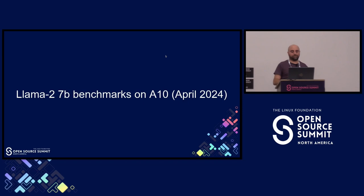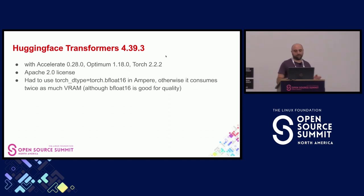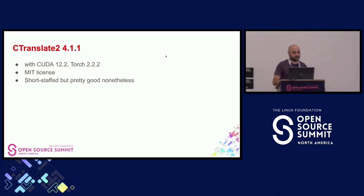We updated the benchmarks in April, so we have fresh data. Here are the versions and different executors we tested. An important note when using the HuggingFace Transformers API on Ampere: if you don't specify the dtype, it consumes roughly twice the GPU VRAM. We want to use BFloat16 for all computations because it has better quality — so be sure to pass the correct parameter when using the `from_pretrained` method. We also tested CTranslate2, which is not so well known — it seems a bit short-staffed; they took their time updating from CUDA 11 to 12, but they did it eventually and it's actually pretty good.